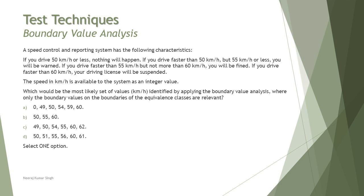Now, the speed in km per hour is available to the system as an integer value. Which would be the most likely set of values identified by applying the boundary value analysis where only the boundary values on the boundaries of equivalence classes are relevant?